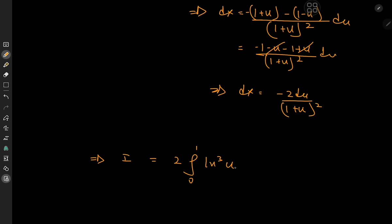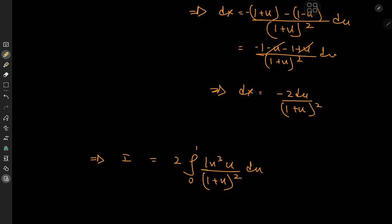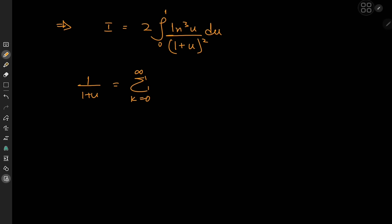This integral looks a lot friendlier than the one we started with. To solve it, we're going to invoke a series expansion. Recall that we can expand 1/(1 plus u) in terms of the geometric series — that is, the sum over non-negative integers k of (−1)^k times u^k — provided the absolute value of u is less than 1, which is valid on our interval of integration. However, this is the series for 1/(1 plus u), not for 1/(1 plus u)².